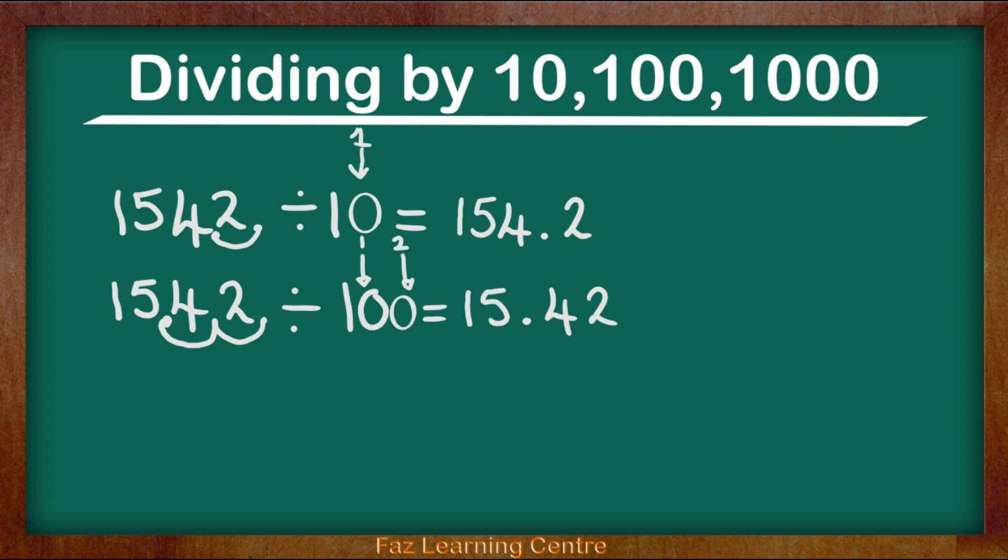Let's go to the next question. 1542, we are using the same number and now we are going to be dividing it by 1000. So 1542 divided by 1000. What does that mean? It means you are making the number 1542 one thousand times smaller.